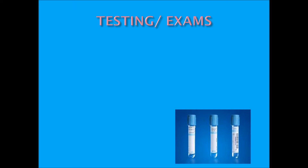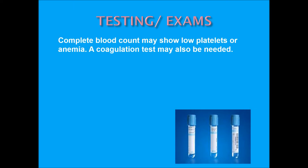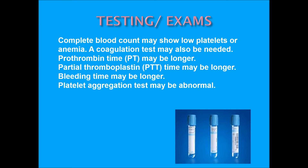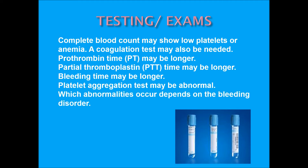The different types of tests and exams that can be done include a complete blood count, which may show low platelets or anemia. A coagulation test may also be needed — PT, which is prothrombin time, may be longer; PTT, which is partial thromboplastin time, may also be longer. Bleeding time in general may be longer, and a platelet aggregation test may be abnormal. Which abnormalities occur depends on the bleeding disorder itself.